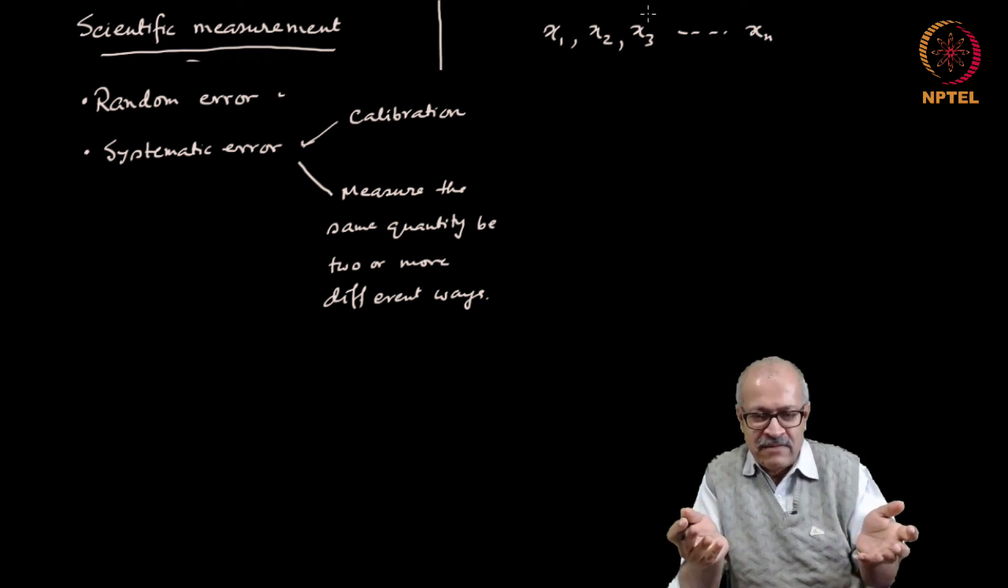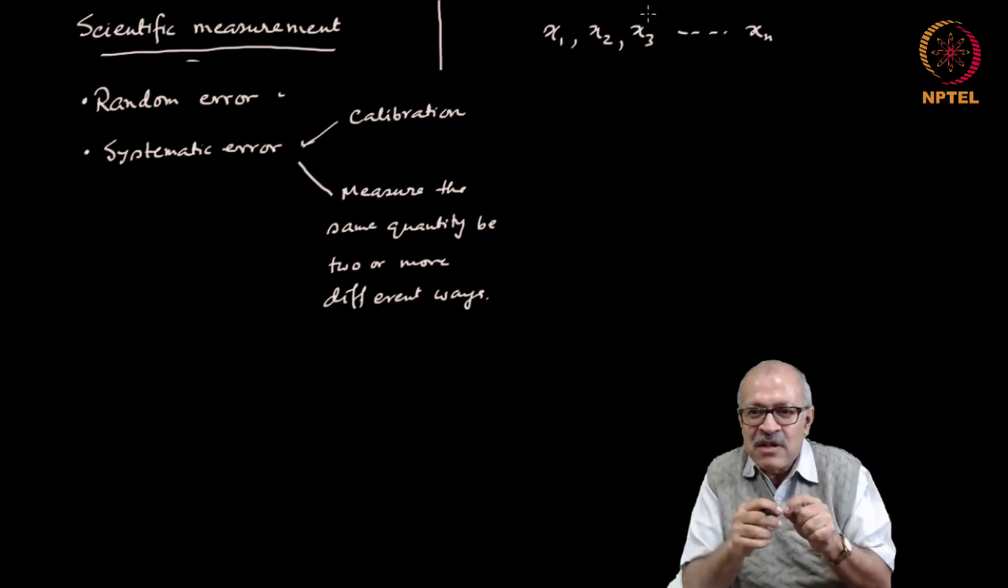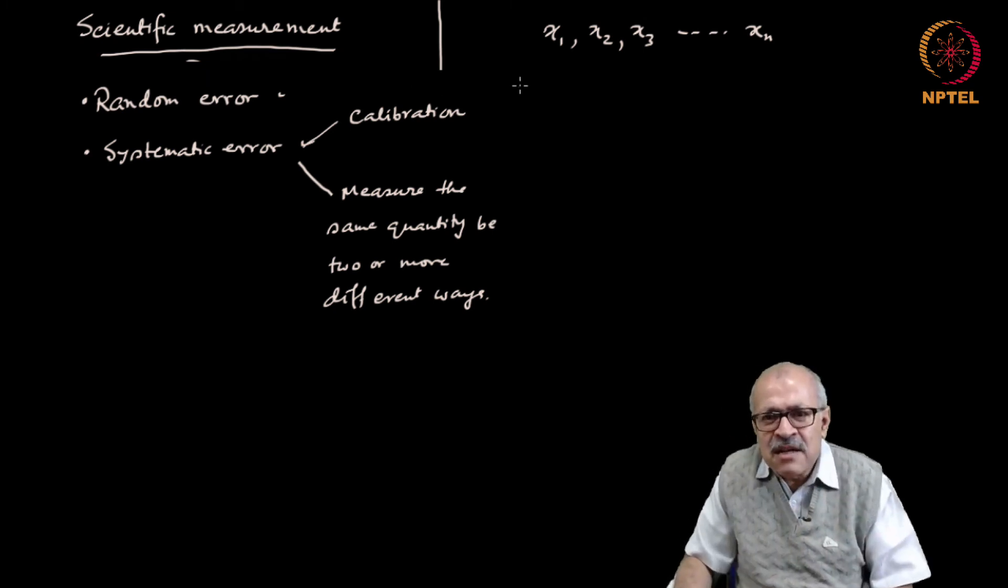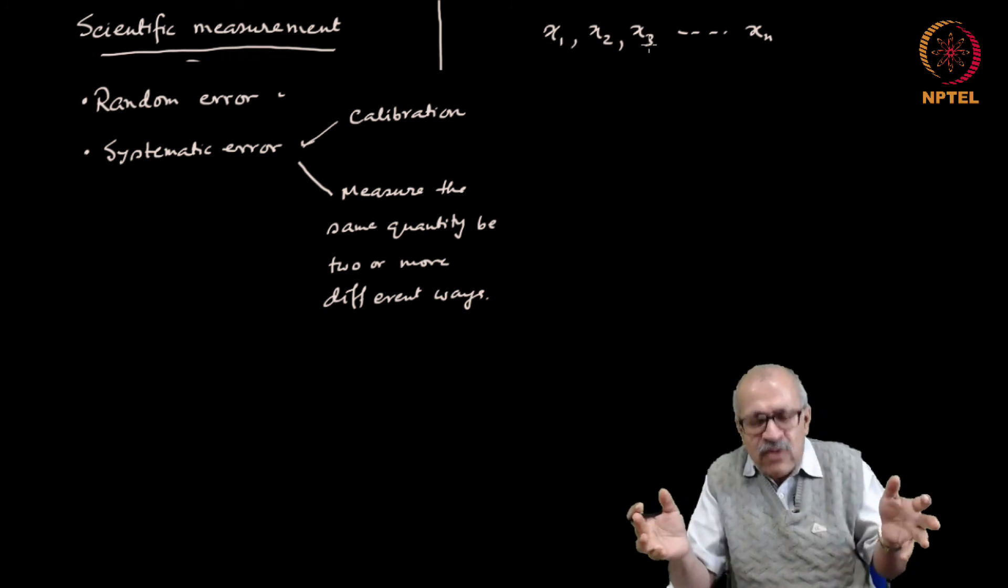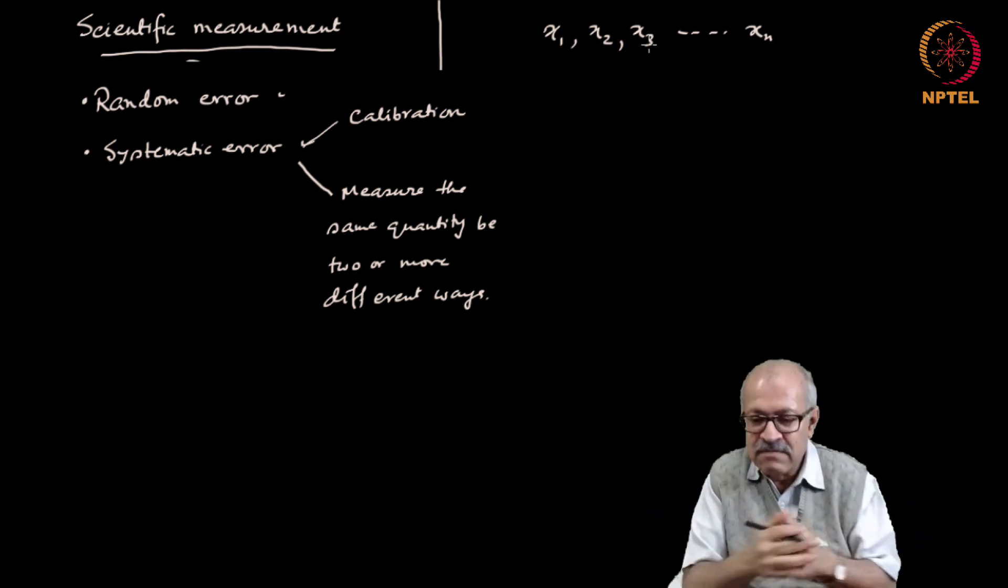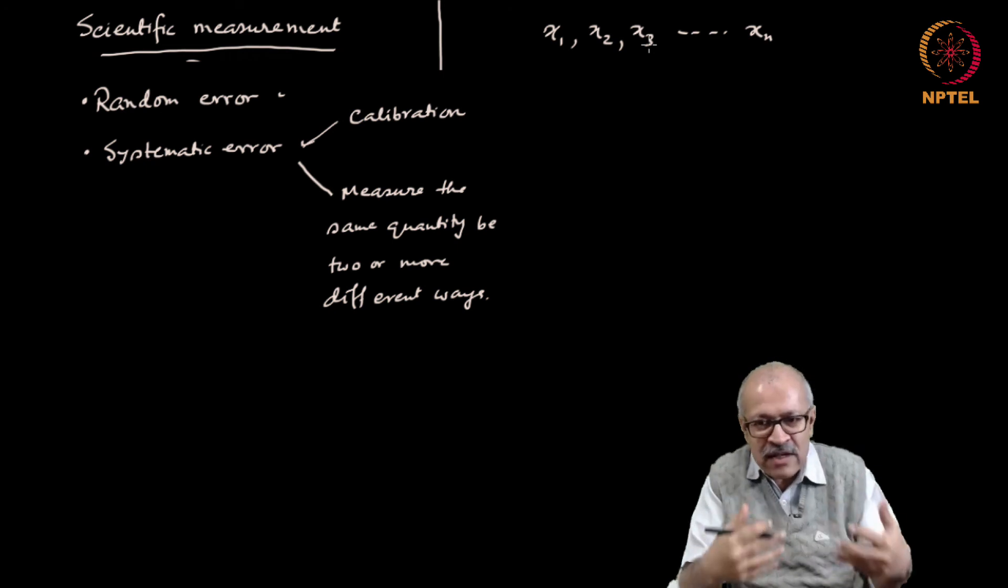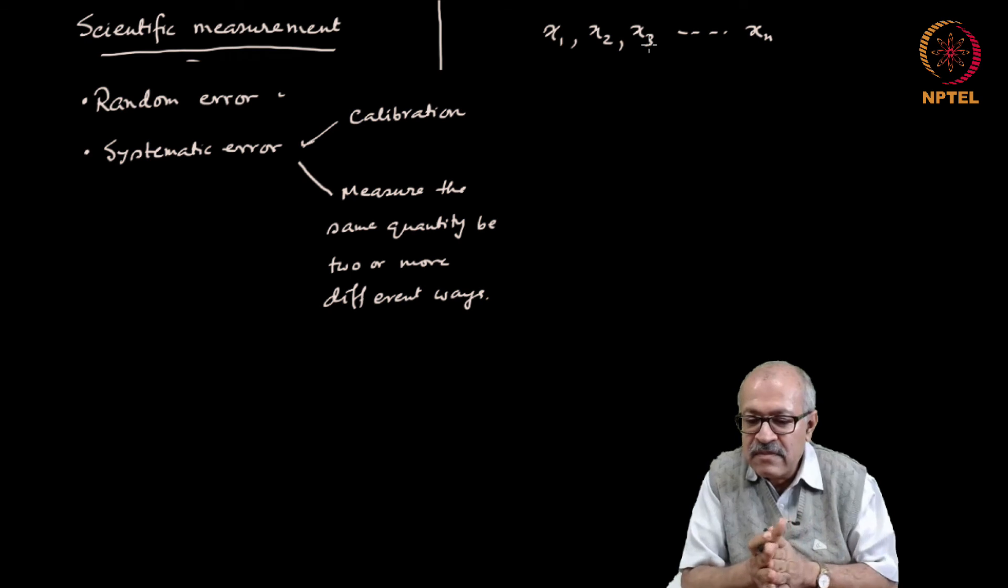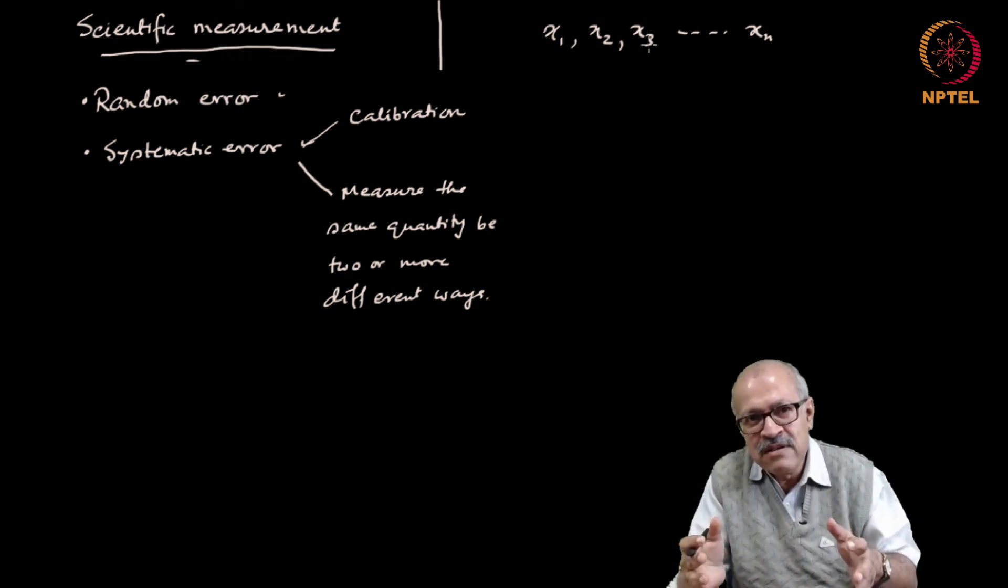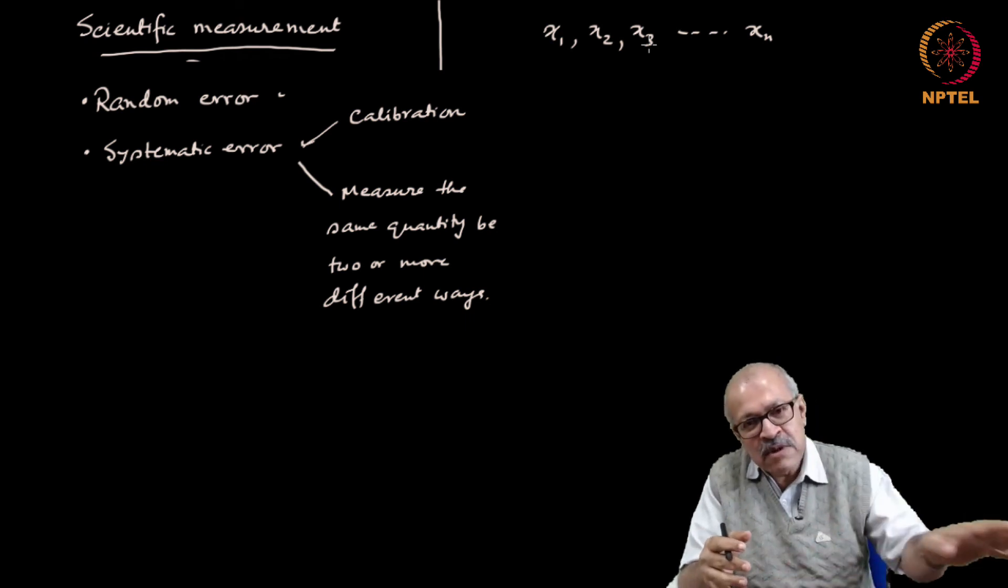And now before we end today's class let me enumerate the questions that immediately arise. For example, how many observations should we take in order for the result that we get to be reliable? The common sense does not immediately tell us any estimate of how many readings should we take. We actually get a large number of values x1, x2, x3, each value is different. Out of that which one should we state in a paper as a measured value? How do we state it? How reliable will be that measured value? Can we state some kind of a degree of confidence that we have in that measured value? And how do we state it?